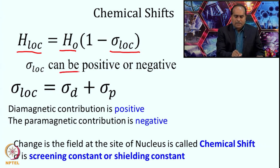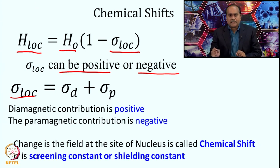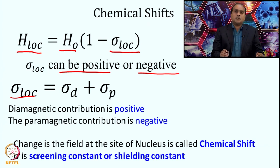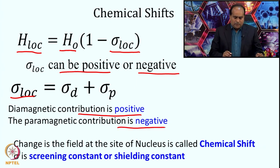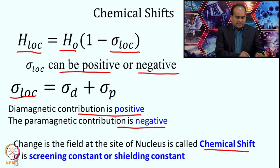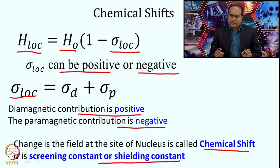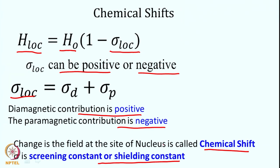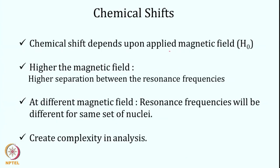Sigma_local can be positive or negative, and depends on two contributions: a diamagnetic contribution and a paramagnetic contribution. Generally, diamagnetic contributions are positive and paramagnetic contributions are negative. The change in the field at the site of a nucleus is called chemical shift, and sigma is called the screening or shielding constant. This is why the same type of nuclei experience different local magnetic fields and show different absorption lines. The chemical shift also depends on the applied magnetic field H0: a higher field gives greater separation between absorption lines.